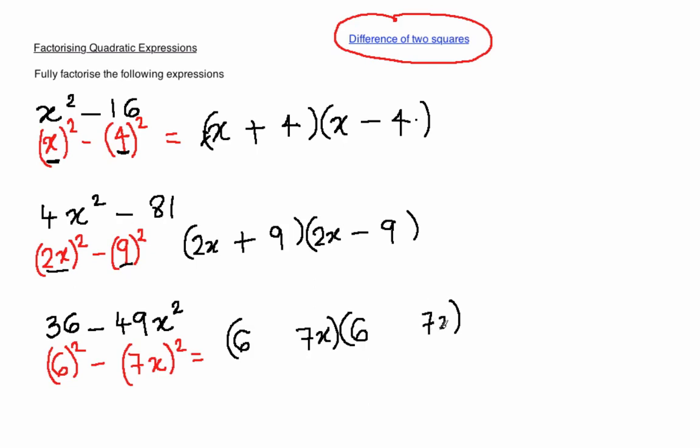And once again you need to put a plus in one, doesn't matter which, and a minus in the other, it doesn't matter which. 36 minus 49x squared is the same as 6 plus 7x multiplied by 6 minus 7x.